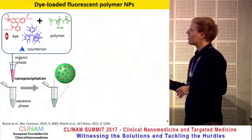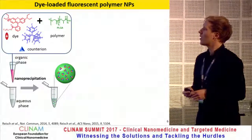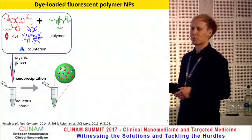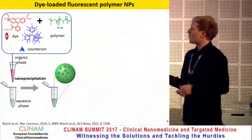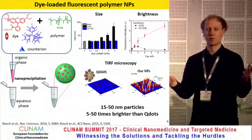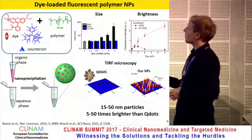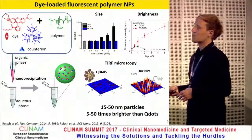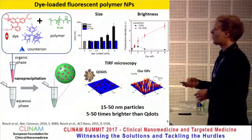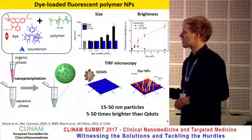We combine the dye-counter-ion system with a polymer in an organic solvent and form nanoparticles through nanoprecipitation by adding this to an aqueous phase. Doing this, we get relatively nice nanoparticles in a size range between 15 and 50 nanometers. The bulky hydrophobic counter-ions very largely avoid self-quenching, giving us nanoparticles that are between 5 and 50 times brighter than quantum dots.